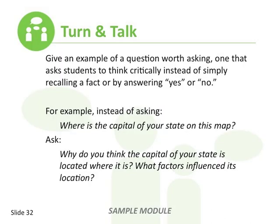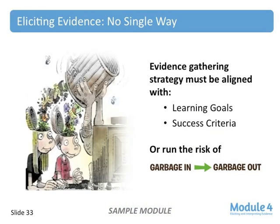After we've done some content, we have a Turn and Talk. Here we're asking participants to think about questions that are worth asking — ones that require some thinking and not necessarily a yes-or-no answer or what I call the 'guess what's in the teacher's head' answer. Then we get into the idea that there's no single way to collect evidence. We spend a lot of time talking about how the evidence gathered must be aligned with the learning goals and success criteria. There's lots and lots of ways to get evidence, but as with any assessment, it has to be aligned with the goal.